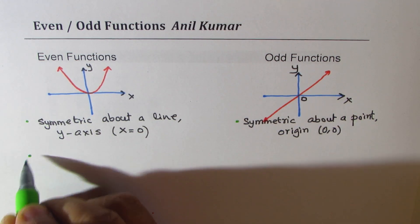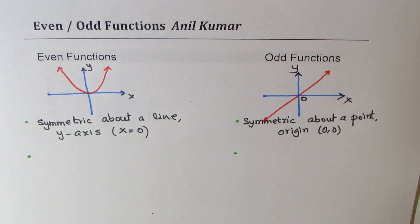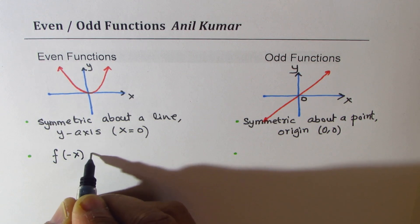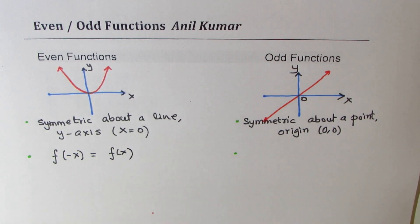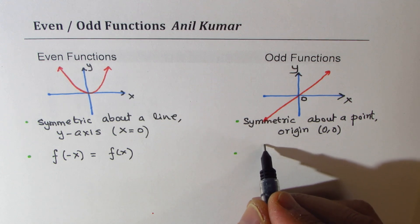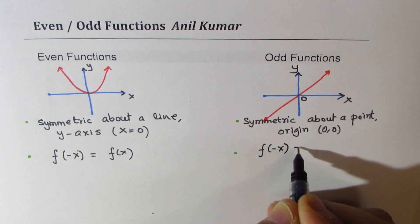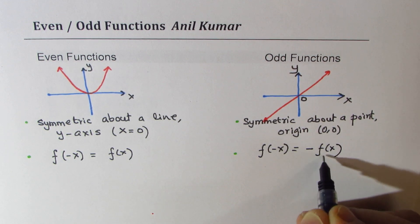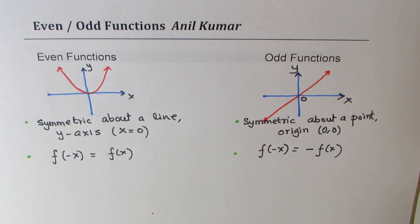How do we find it algebraically? Algebraically, if I try to find f of minus x and I get negative of f of x, then it is odd. That's the whole idea — algebraically, we could do it like this. To give you a simple example, let's take a few functions.